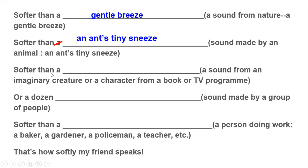For the next blank — softer than a sound from an imaginary creature or a character from a book or TV program — I've thought of: softer than a baby Who's whimpers. Who is a character from a book — the Whos live in Whoville. You'll find the character in Horton Hears a Who by Dr. Seuss. It's a very interesting story. Whos are very tiny and live within a snowflake, so I've chosen this character. Whimper is a soft sound that a baby makes.